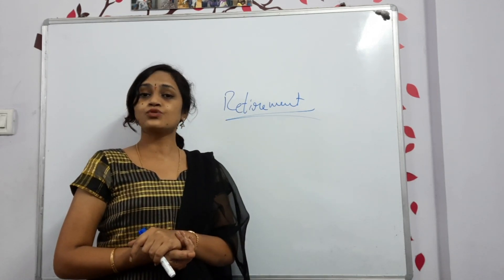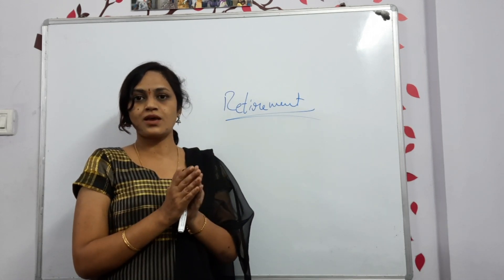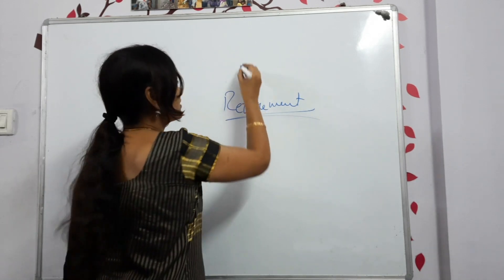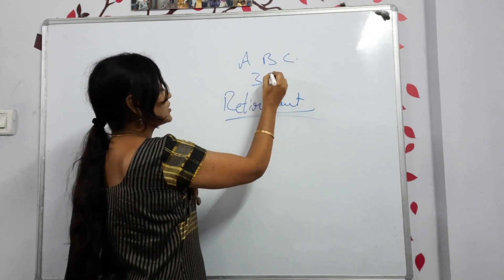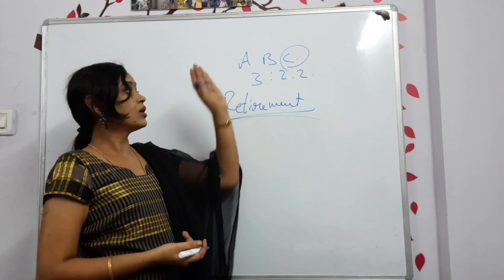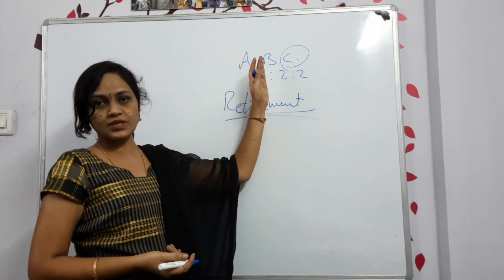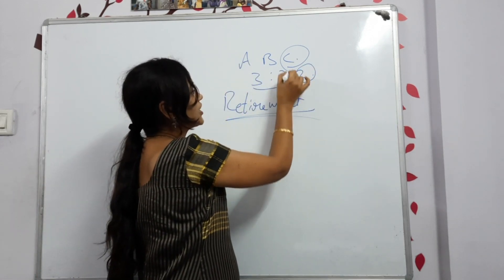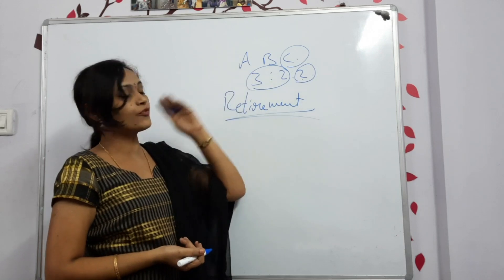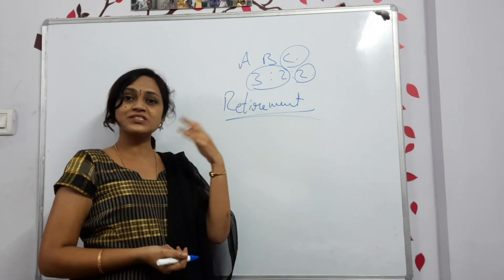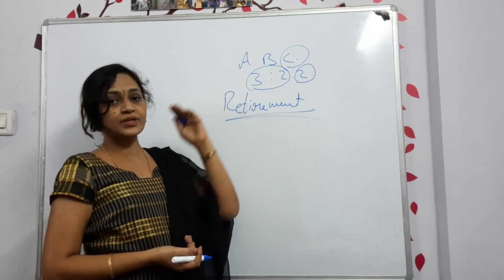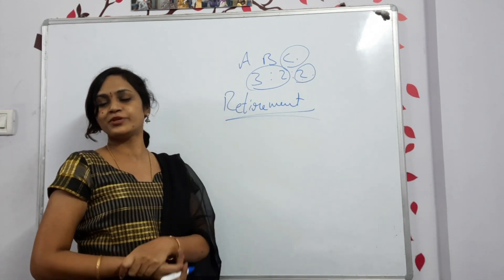When he terminates or doesn't want to be in the partnership, what do we have to do? Say there are three partners A, B, and C sharing in 3:2:2 ratio. Now C wants to leave the business, so only two partners are left. A and B will receive C's share. How much are they gaining? What is their gain ratio - are they receiving equally, or is there a method? That is what you will be learning.